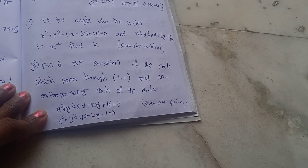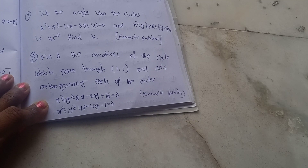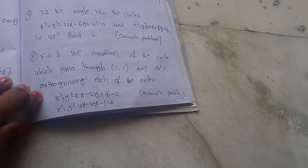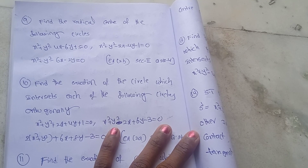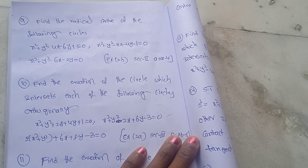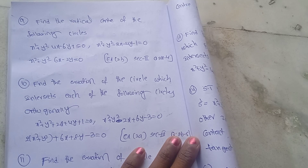Find the equation of the circle which passes through (1, 1) and cuts orthogonally each of the given circles. This is Exercise 2B, Section 2, Question 4.